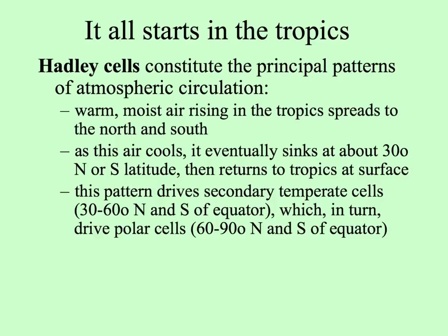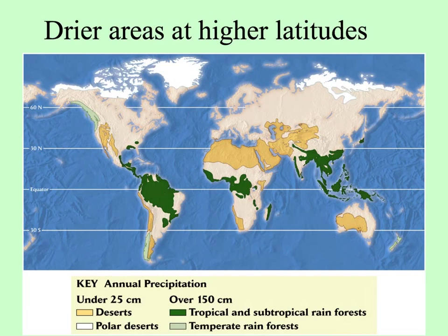From the equator, warm moist air rises in the tropical regions, spreading to both the north and south. At about 30 degrees north and south, the air cools and sinks, returning to the tropics at the surface in a tubular band of circulating air. This drives secondary temperate cells between 30 and 60 degrees north and south of the equator, which in turn drive the polar cells. The result is that areas at higher latitudes are much drier than areas toward the equator.